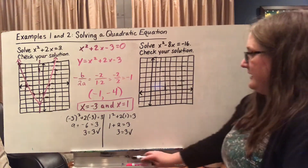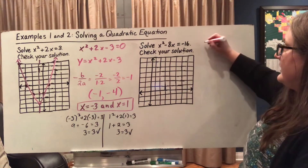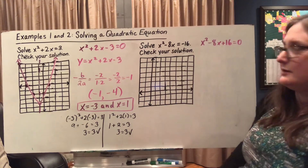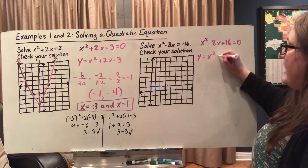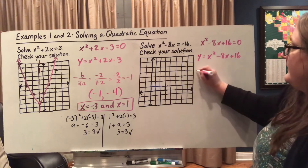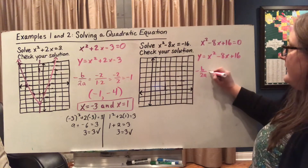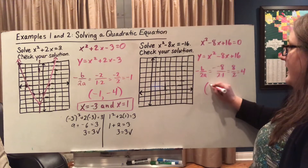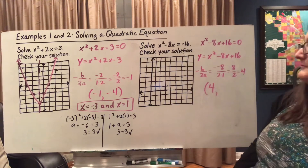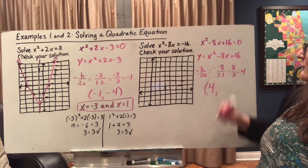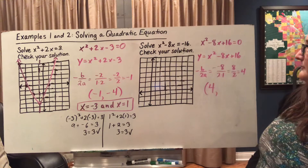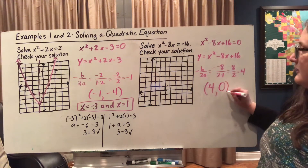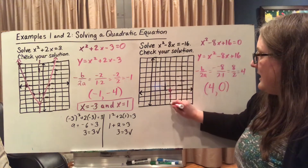Let's try another one. This time I have x² - 8x = -16. When I set it equal to 0, I get x² - 8x + 16 = 0. My related equation is y = x² - 8x + 16. I need to find the vertex: negative b over 2a gives me -(-8) over 2(1), which is 8 over 2, or 4. So the x-coordinate of my vertex is 4. Plugging back in: 4² - 8(4) + 16 = 16 - 32 + 16 = 0. So (4, 0) is my vertex, and here's my axis of symmetry.